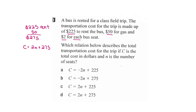Looking at the options, C equals 2n plus 275 is answer D. We can eliminate A and C because their initial value was 225, which is wrong — it should be 275. We can also eliminate the option with a negative coefficient because the price goes up for each rider, not down. That leaves us with D: C equals 2n plus 275.